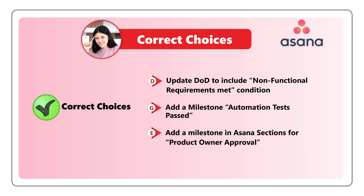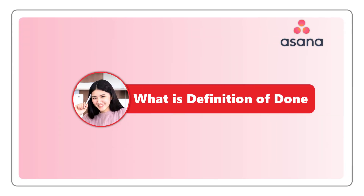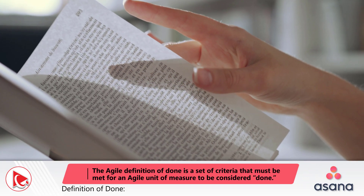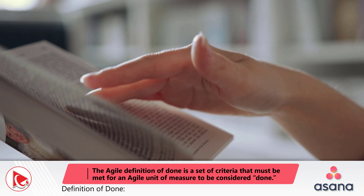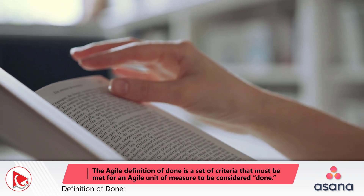What's interesting about this question is that it tests your knowledge of Asana as well as agile methodology. On top of that, there is a negative selection in the question design — you're being asked which steps will NOT help her accomplish this objective. To better understand the answer, let's look at what is definition of done.